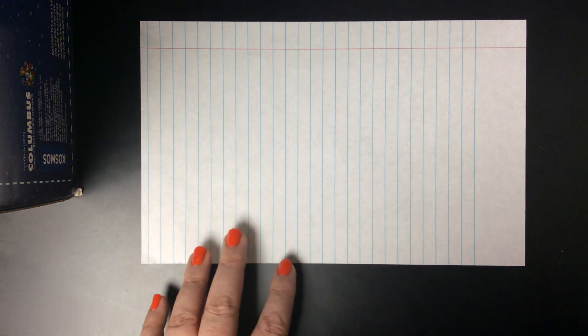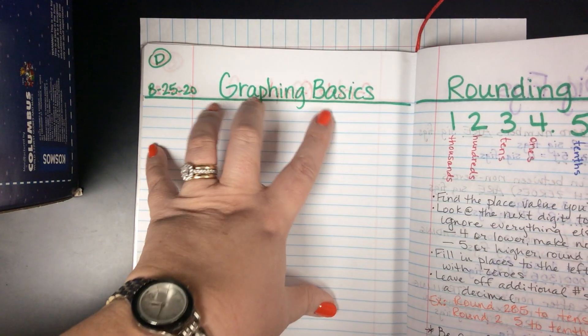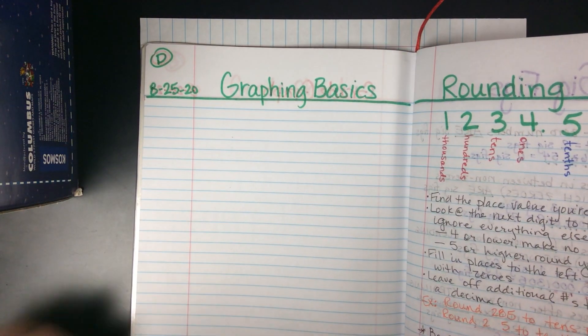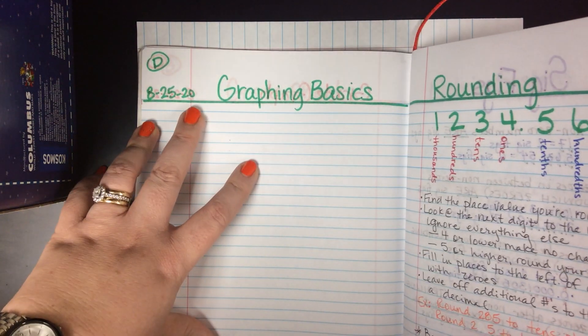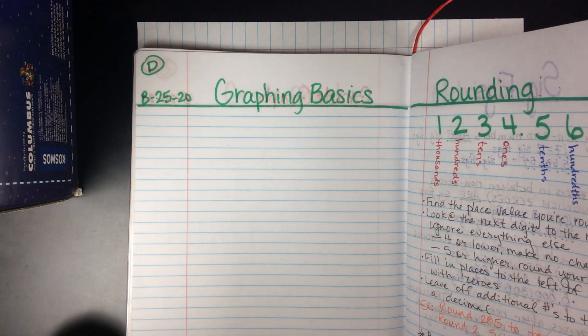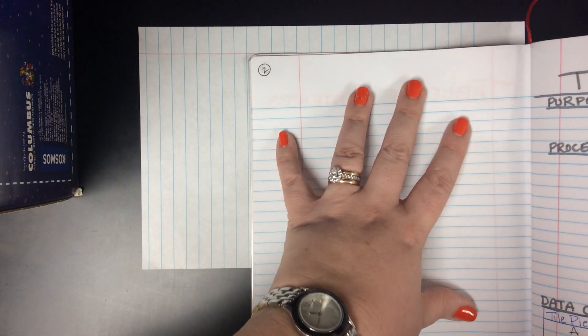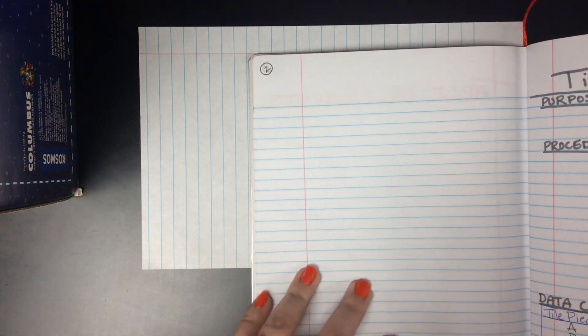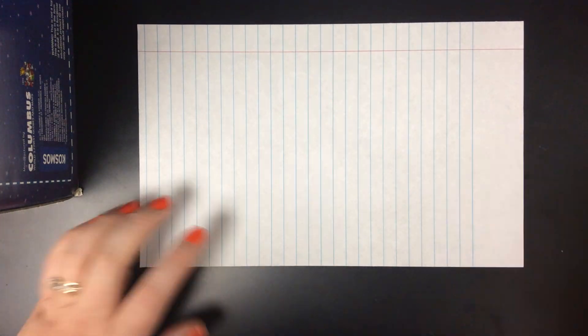So you also need your journal because we're going to start off taking some notes on page D, graphing basics. As I'm explaining how to make a graph, you should be taking notes of what I'm saying. You're also at the end of this video or while I'm talking going to be making a graph on page two of your tile lab. You're going to need the data chart from your tile lab as well because that's how we're going to scale our axes.